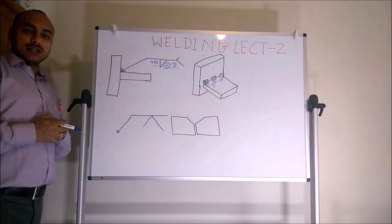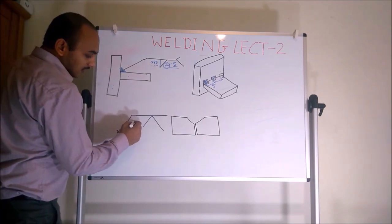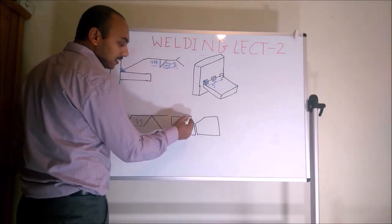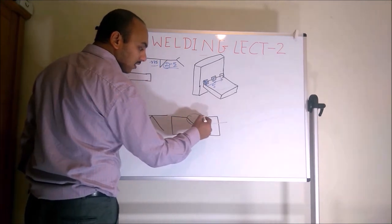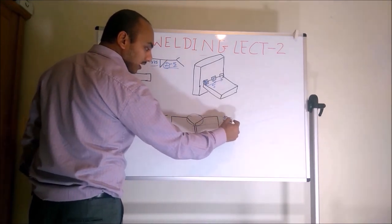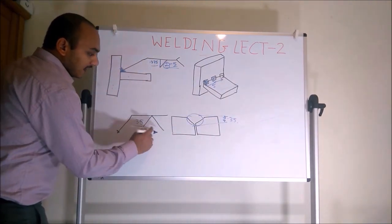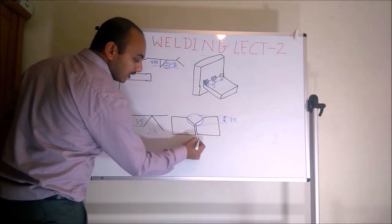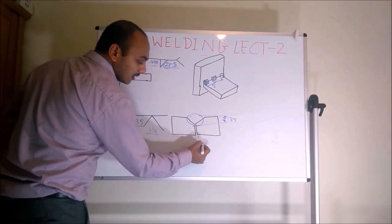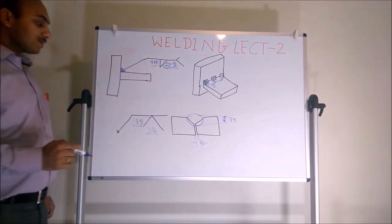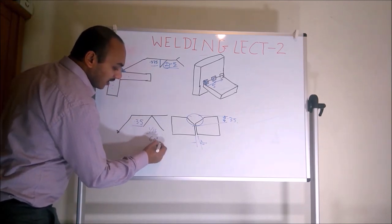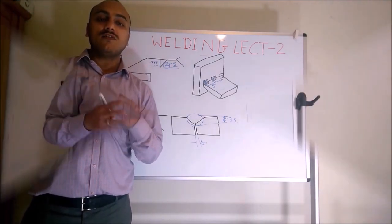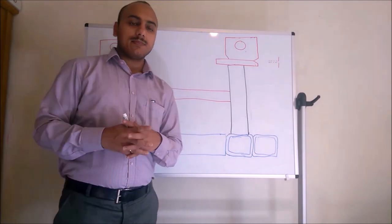Now let us discuss how groove weld dimensions are defined. We can define a penetration dimension — for example, 0.35 for the depth. We can also define the root opening, such as 1/16 inch. We can give the groove angle as well. In this way we define the dimension and size of groove welds.